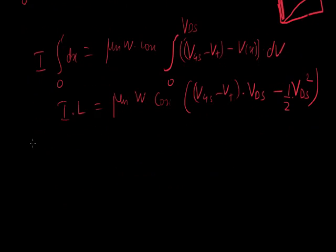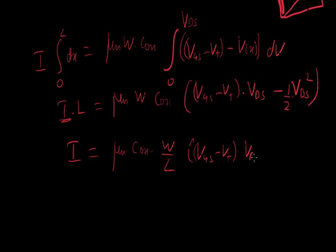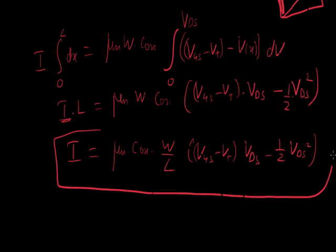Now, we're almost there. It's just a rearrangement of terms that all is required here. So I can be finally given as mu N times Cox times W over L, VGS minus VT times VDS minus half VDS, the whole square. I mean, square.